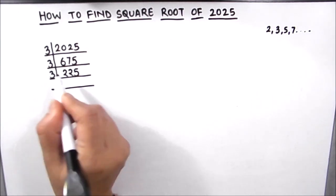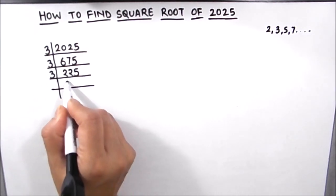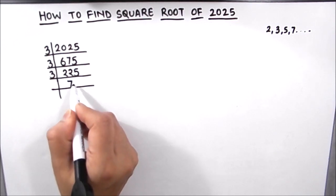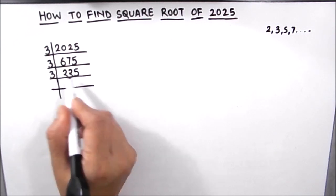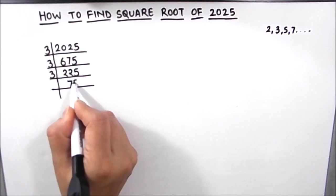Again we can use 3 to divide the number. 3 times 7 is 21, 1 is remainder, then we'll drop down 5, that becomes 15. 3 times 5 is 15.